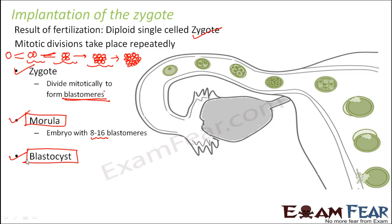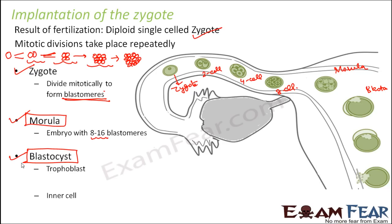Starting with the zygote, it formed a two-cell structure, then four-cell, then eight-cell, and so on — that is how a morula was formed, and then a blastocyst was formed. This blastocyst gradually developed and finally got attached to the wall of the uterus. The blastocyst consists of two layers: one is the trophoblast (the outer layer) and one is the inner cell mass.